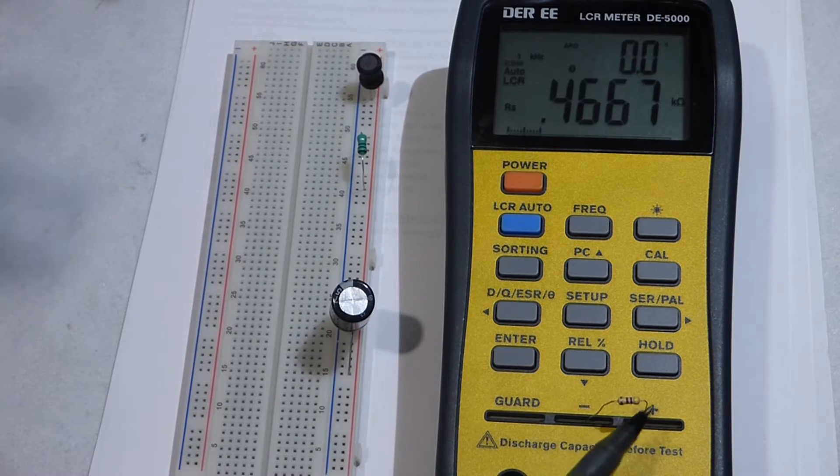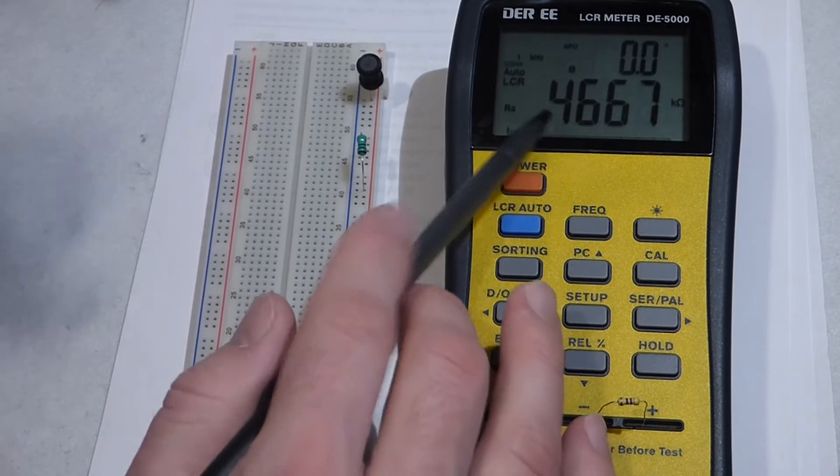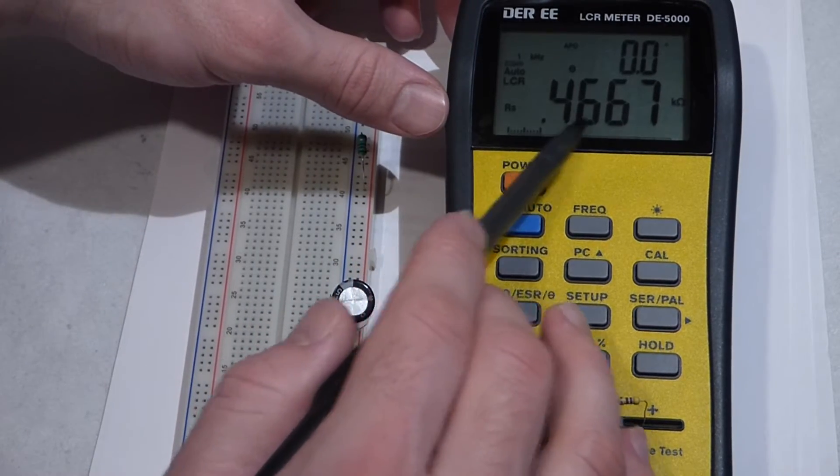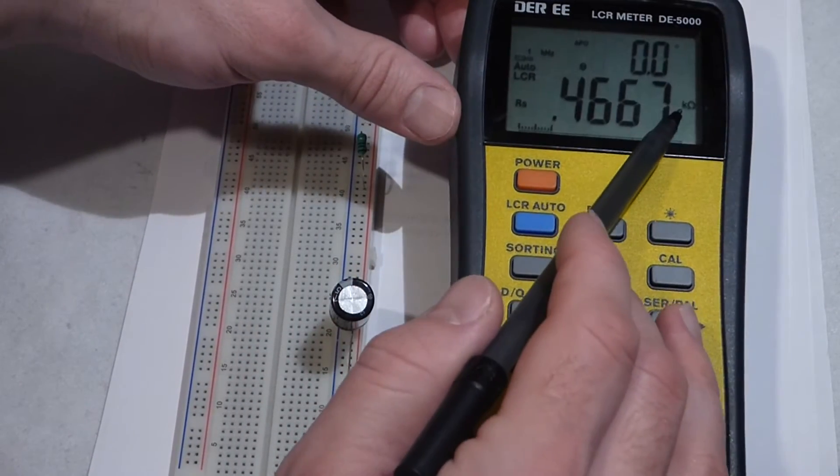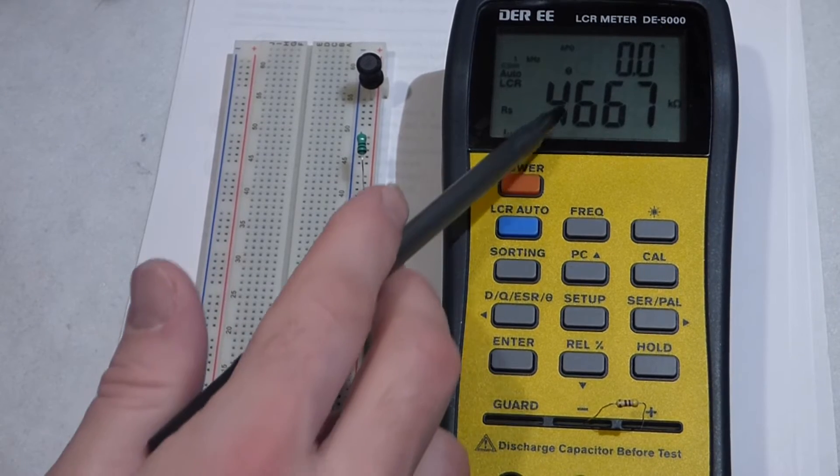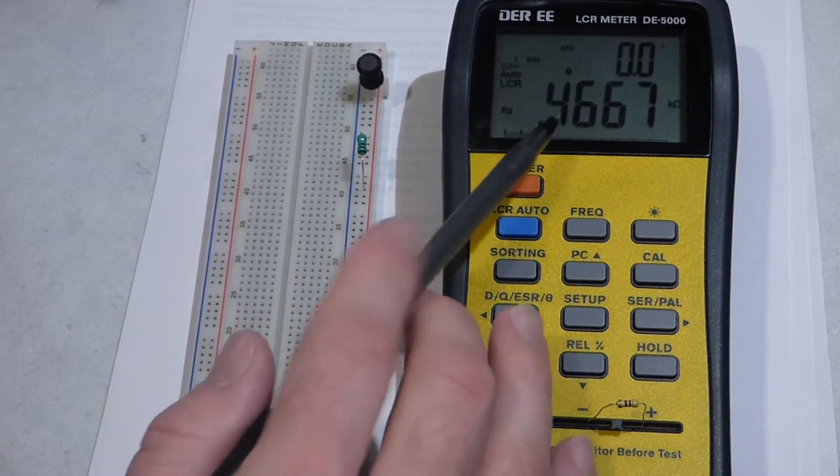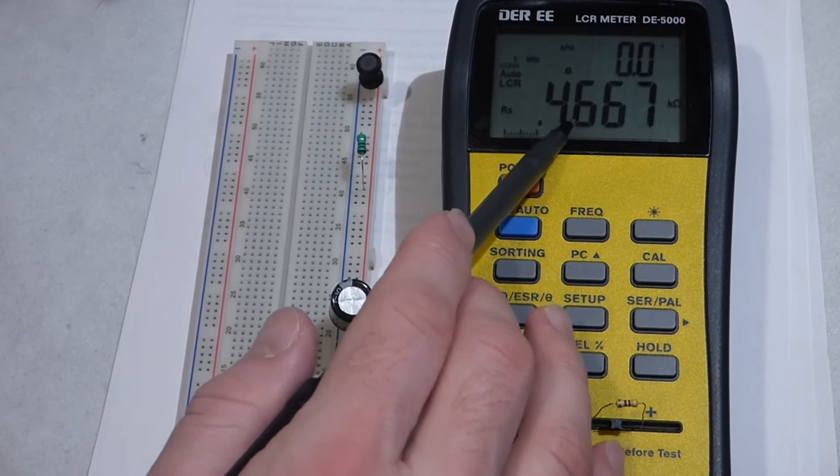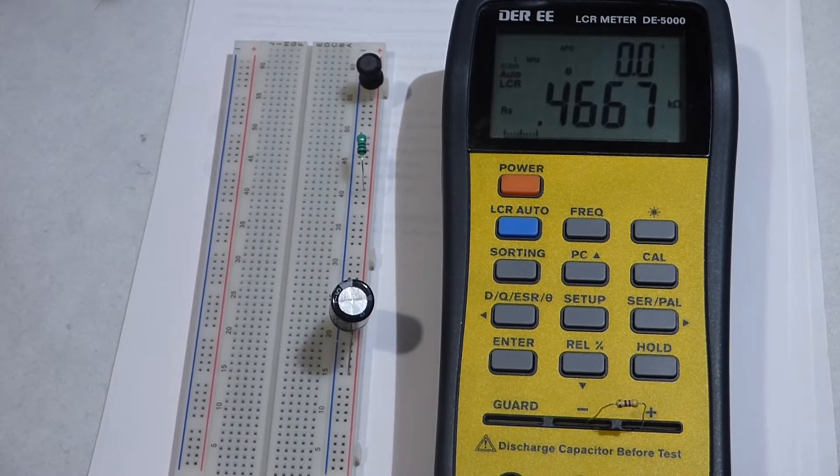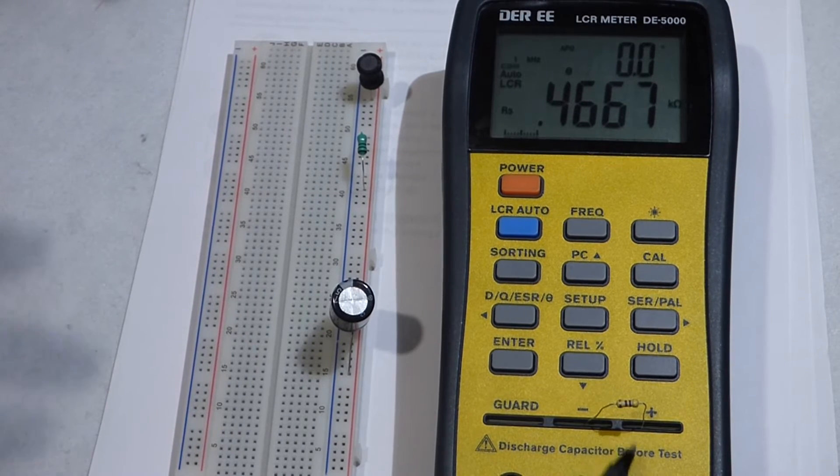Now you see this is 470 ohms, slightly smaller due to tolerance. Here you see 0.4667 in kilohms though. I can probably change that setting - I'm new to this meter, I haven't fiddled around with it much. 0.4667 kilohms is the same as 470 ohms, and all I had to do was slide the resistor in there.